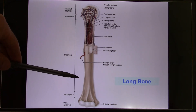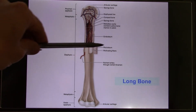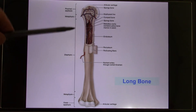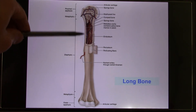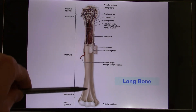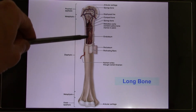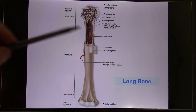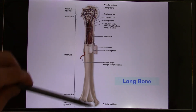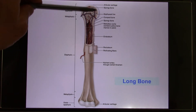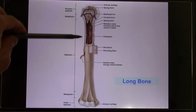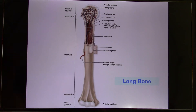On the outside you have the periosteum — that's the connective tissue membrane covering it. Inside you have the endosteum. This is where the bone marrow stays, in the medullary cavity. In the two ends you have the spongy structure — we call it spongy bone. The center part is the compact bone.